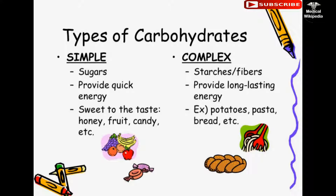Types of carbohydrates: Simple — sugars that provide quick energy, sweet to the taste. Examples include honey, fruit, candy, etc. Complex — starches and fibers that provide long-lasting energy. Examples include potatoes, pasta, bread, etc.